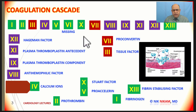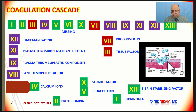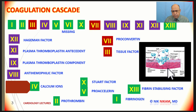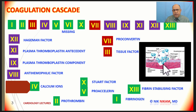Before we proceed with the coagulation cascade — whenever there is injury to an arterial wall or capillary wall, there is damage to the endothelium. This traumatized segment is filled by platelets creating a plug. This is an immediate response, along with vasoconstriction. This sets off the coagulation cascade. Let us look at the pathways by which a blood clot is formed to plug this leak.